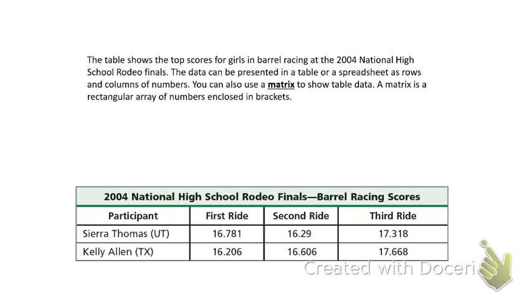A matrix can be written to show data. We can take, for example, we have a table here that has information about barrel racing. The table shows scores, three scores for two girls, and we can represent tables as a spreadsheet or we could represent it as rows and columns. If we represent this as rows and columns, then we bring in what we call our matrix. And we can use our matrices to show data from a table.